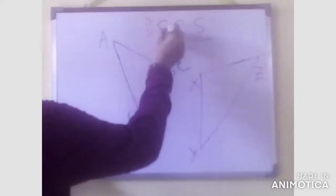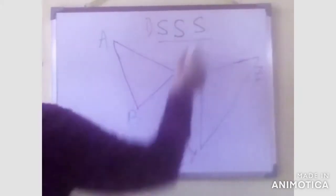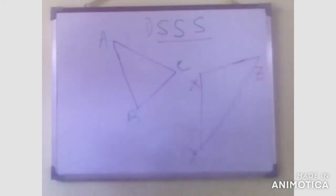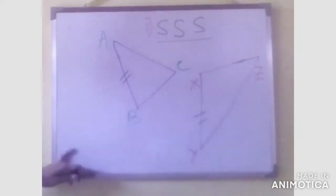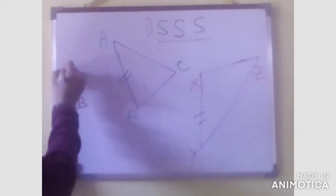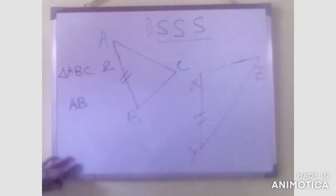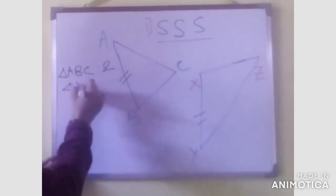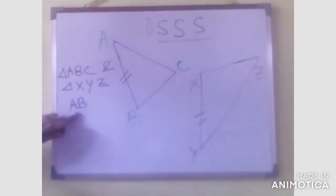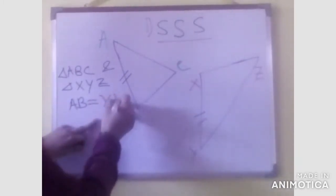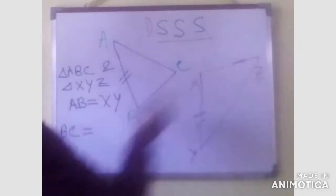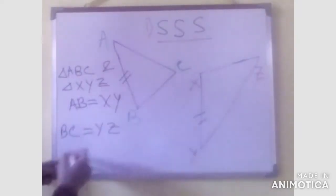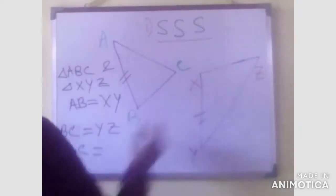If the three corresponding sides are equal to each other, then we can say yes, the two triangles are congruent. Suppose in triangle ABC and triangle XYZ: AB is equal to XY, BC is equal to YZ, and AC is equal to XZ.